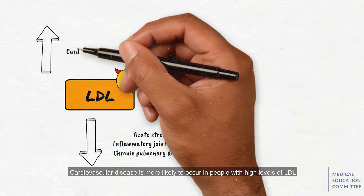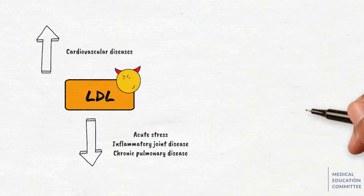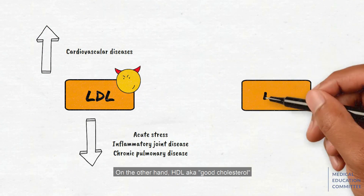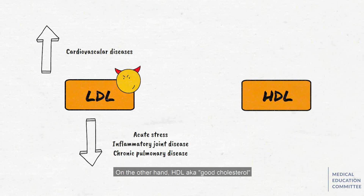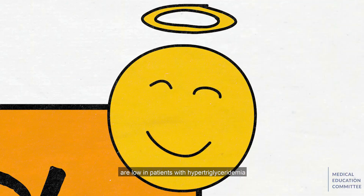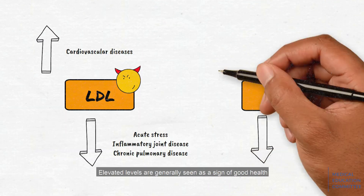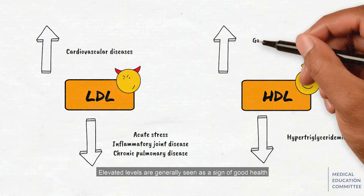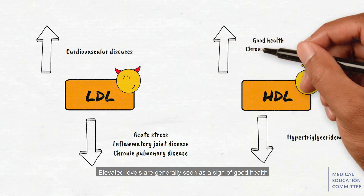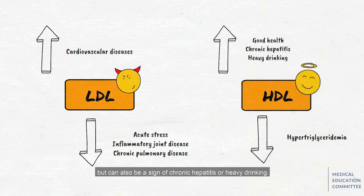Cardiovascular disease is more likely to occur in people with high levels of LDL. On the other hand, HDL, also known as good cholesterol, is low in patients with hyperchylomicronemia. Elevated levels are generally seen as a sign of good health, but can also be a sign of chronic hepatitis or heavy drinking.